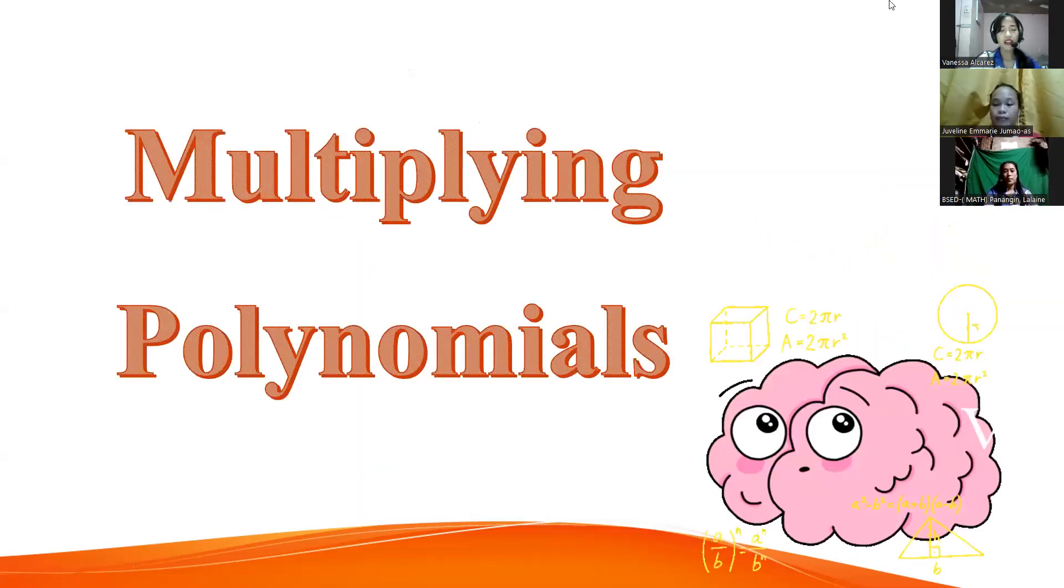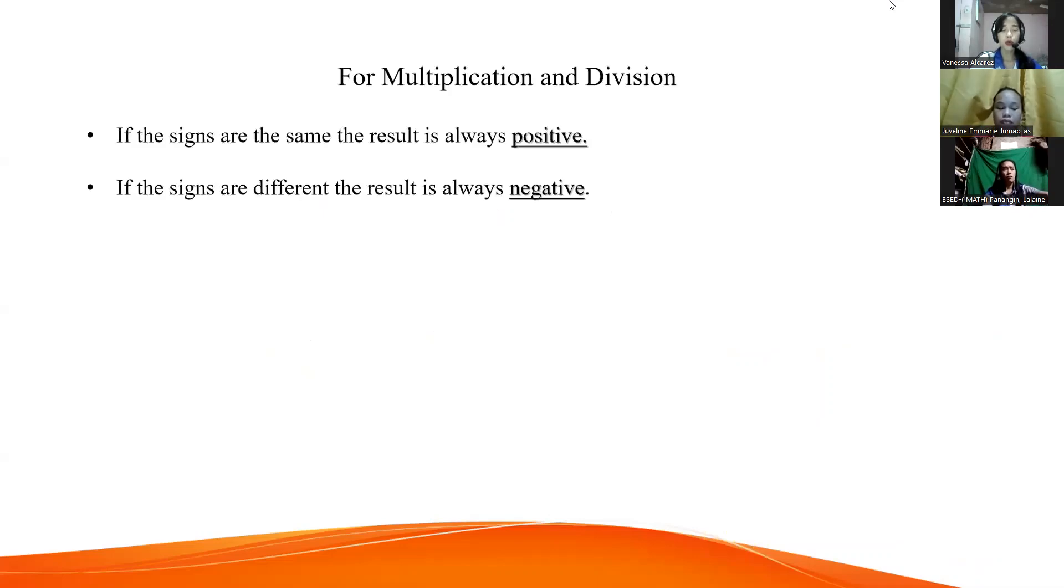Our lesson is all about multiplying polynomials. But first, let me share the rule of multiplying and dividing integers. If the signs are the same, the result is always positive. And if the signs are different, the result is always negative.